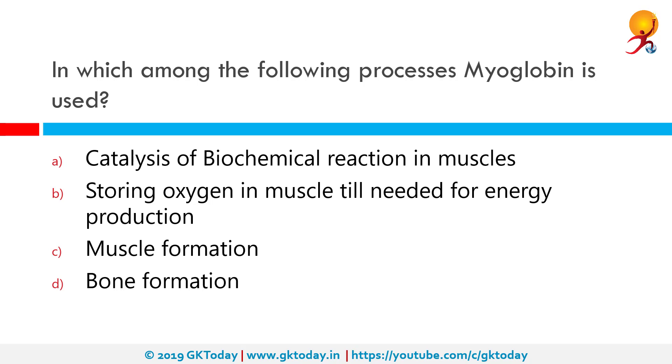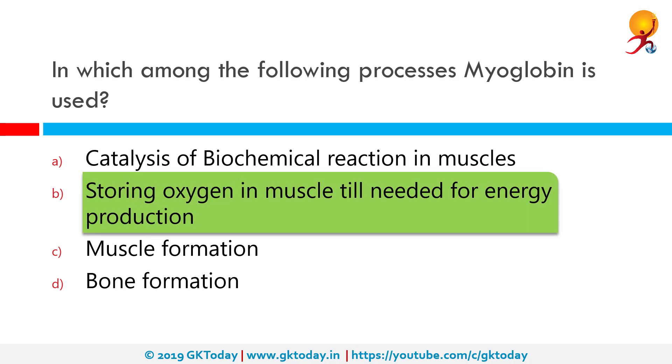In which among the following processes is myoglobin used? The correct answer is storing oxygen in muscle until needed for energy production.